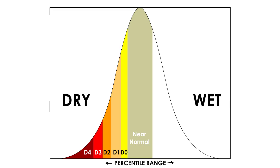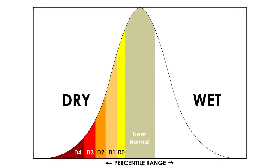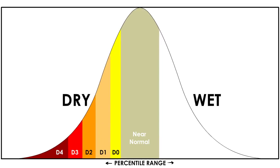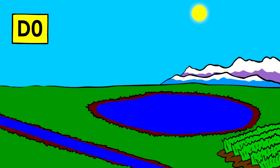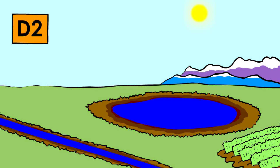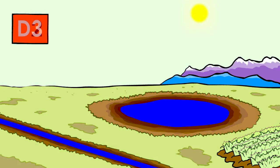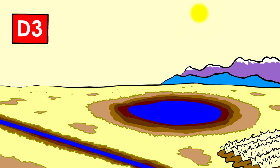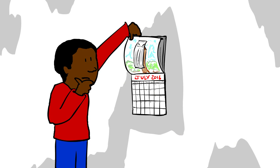If droughts were to become more frequent and more severe, those observations would be added to the climate record, which would then change what we may expect. The severity of drought can increase over time as factors contributing to drought compound. That's why these statistics are valuable — they let us know what to expect, or can at least show us how often these events may occur.